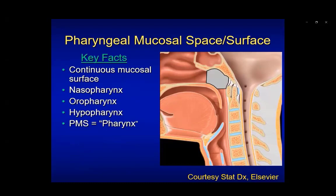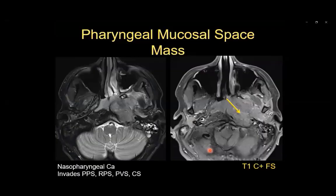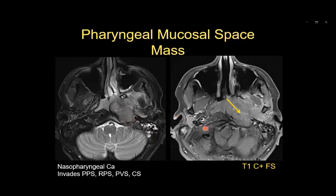The lateral view illustrates the pharyngeal mucosal space. Superiorly, the nasopharynx at the level of the nose is divided from the oropharynx at the level of the hard and soft palate. The hypopharynx is the inferior continuation of that tube, divided from the oropharynx at the level of the hyoid bone and the larynx. Whenever you see fluid in the mastoid air cells, the first thing to do on every head and neck case is look at the nasopharynx — is there a small lesion obstructing the eustachian tube causing that fluid? In this case, there's a very large nasopharyngeal carcinoma extending laterally to affect the parapharyngeal space, posteriorly to affect the retropharyngeal and perivertebral spaces, and laterally to affect the carotid.